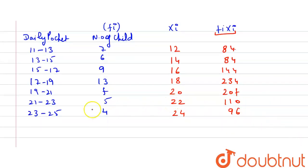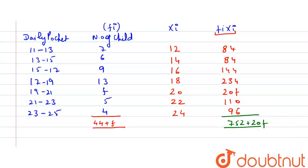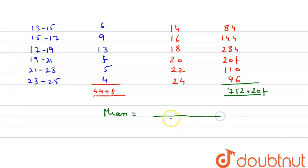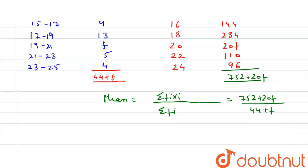Now we calculate the totals. The total number of children is 44 plus f, and the total of fi·xi is 752 plus 20f. You know that the mean equals the sum of fi·xi divided by the sum of fi. So mean equals (752 plus 20f) divided by (44 plus f), and the mean given in the question is 18.